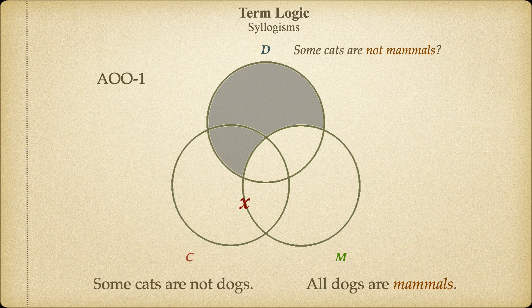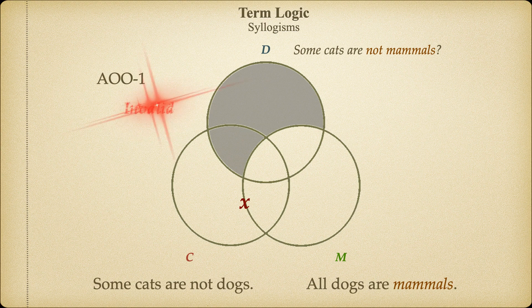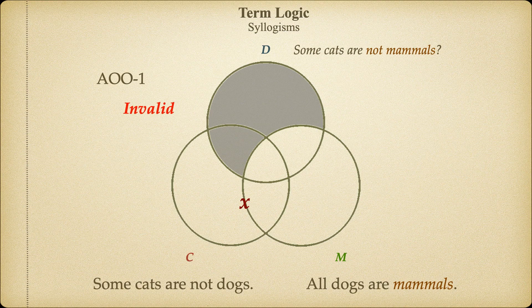Now let's consider the conclusion: some cats are not mammals. Must there be at least one cat that is not a mammal? Since the minor premise was ambiguous about the inclusion or exclusion of the term mammal, the conclusion might or might not be true, depending on whether the cat specified falls in region 5 or region 6. Hence this argument is invalid. Since the major term is distributed in the conclusion, it should also be distributed in the major premise, but it wasn't. This argument has an illicit major term. Similarly, if the minor term were distributed in the conclusion but not the minor premise, that would be the fallacy of illicit minor term.